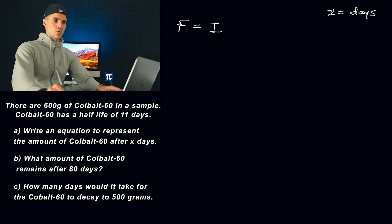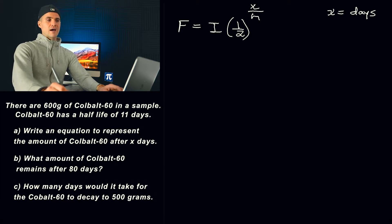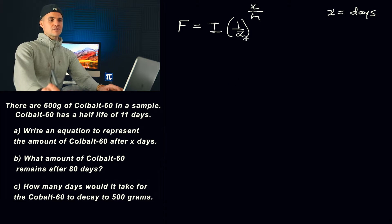we know that for a half-life, our general equation is going to be the final amount equals the initial amount. We're going to have a half as the base, the number of the time period, which actually is x - sometimes you'll see it as t - and over here we have the half-life. If it's a doubling question, then this base here is going to be two. Or if it's a tripling question, it's going to be three. In this case, it's a half-life question, so that base of this exponential function is going to be a half.